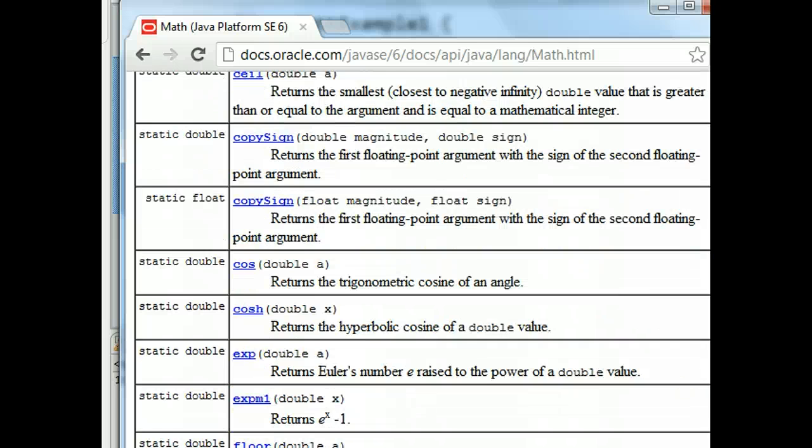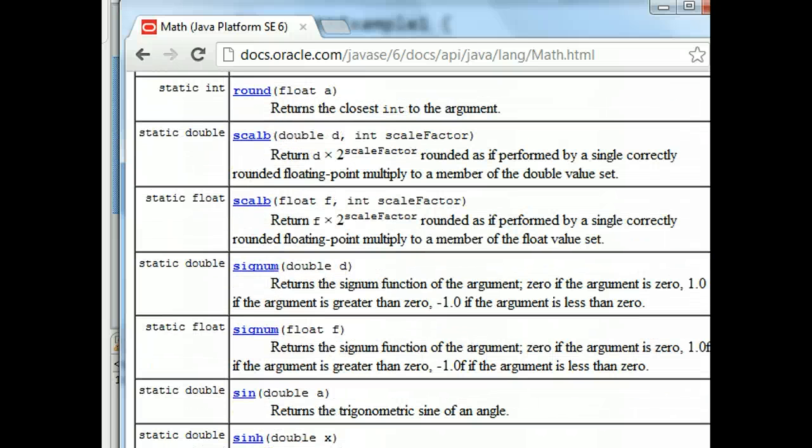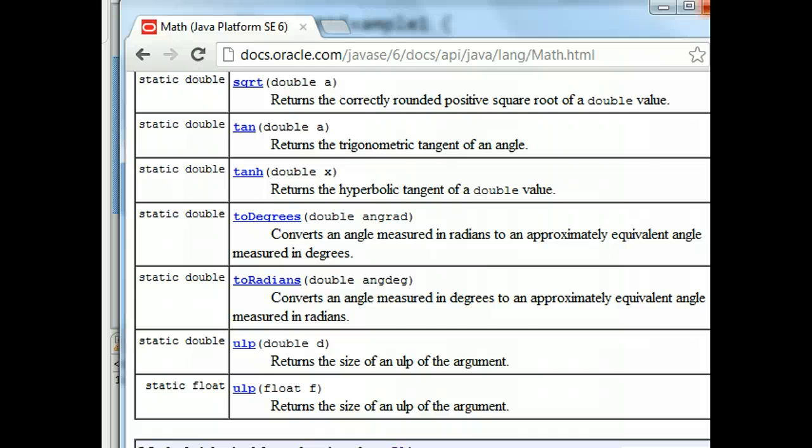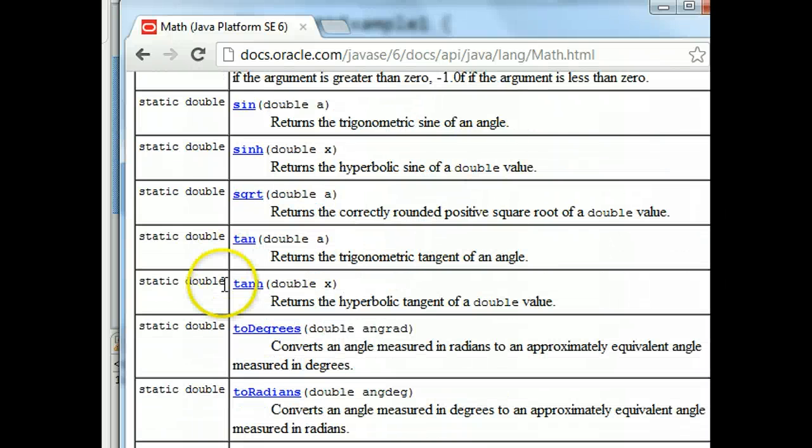So another popular one is square root. So if I scroll down here, I think there's an sqrt, there it is. We see that we have the square root method. It requires a double, so I have to give it one double value. And it returns a double, so that's what it spits out. I have to have a variable ready to hold that.